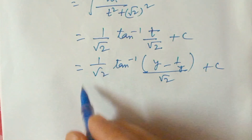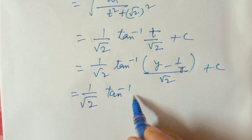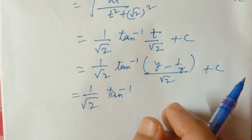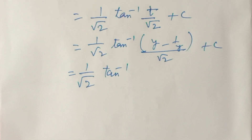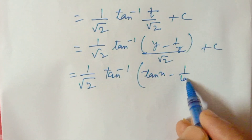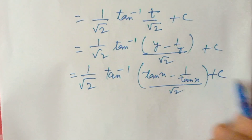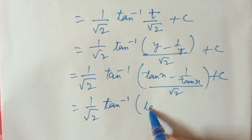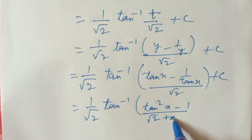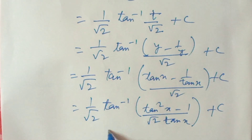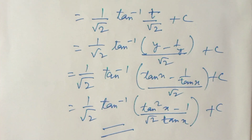Substituting back y equal to tan x, the final answer for the integral of 1 over sin to the power 4x plus cos to the power 4x is 1 over root 2 times tan inverse of tan x minus 1 over tan x, all divided by root 2, plus c.